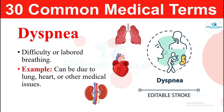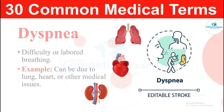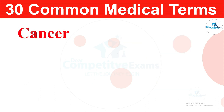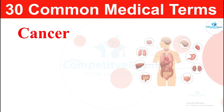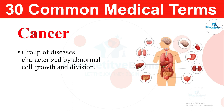The next medical term: cancer. Cancer is a group of diseases characterized by abnormal cell growth and division in the body. It includes various types like breast cancer, lung cancer, and skin cancer.